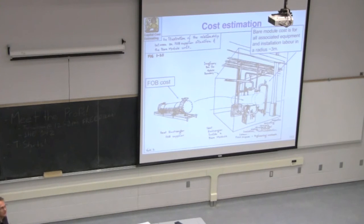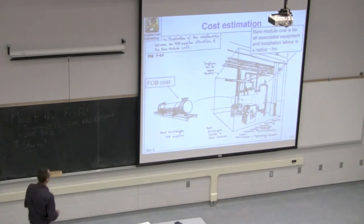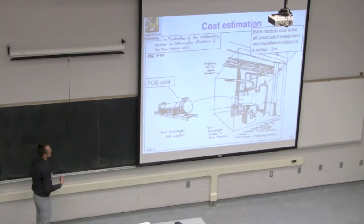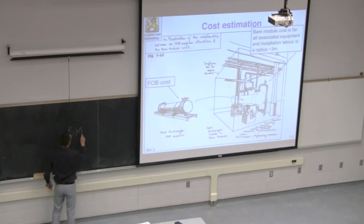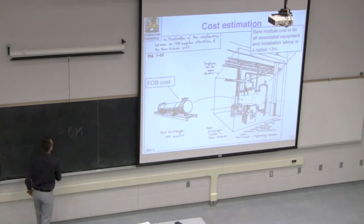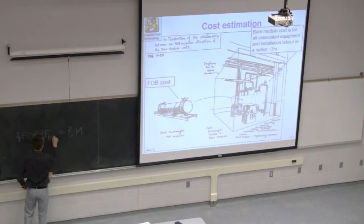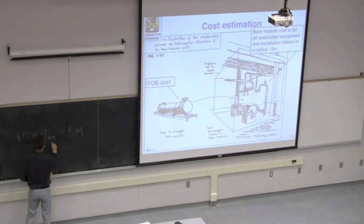We have this diagram which is very informative. The equipment is on the pallet, and all the costs — the multiplier taking from there to fully installed — is what the bare module factor is. In today's class we'll use a small systematic notation: the bare module cost equals the FOB cost multiplied by this bare module factor. That's the value we look up from the table, and it's typically around 3 to 4.